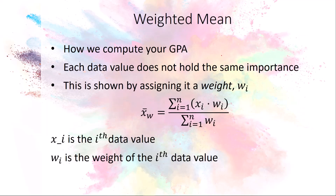On top of regular means, we also have weighted means — you're familiar with these because that's how GPA is computed and how your final grade is calculated. Each data value does not have to hold the same importance. The formula assigns a weight w to each data value x-sub-i: you sum the products of each value and its weight, then divide by the sum of all the weights.